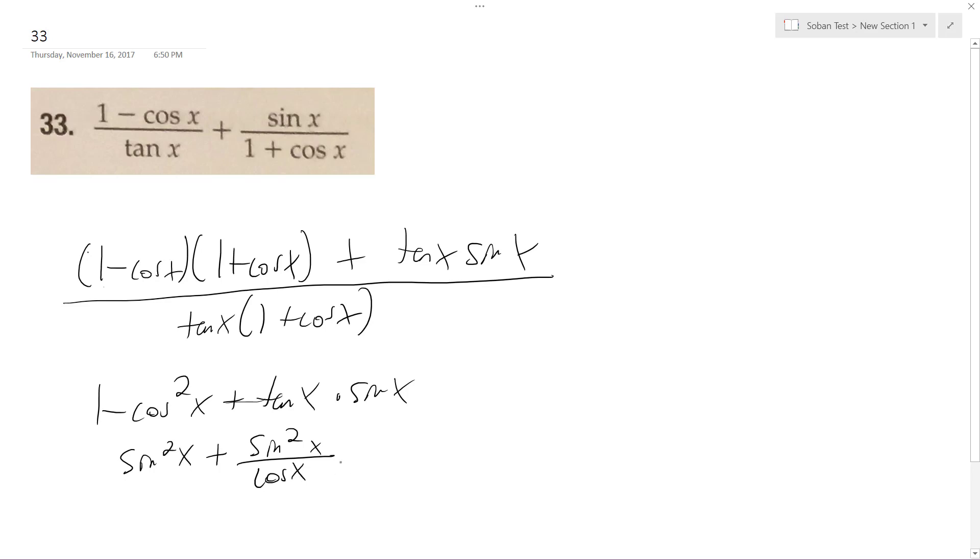I'm still working on the numerator, so don't think I'm skipping the denominator. So I get sine squared x, cosine x, plus sine squared x, all over cosine x.